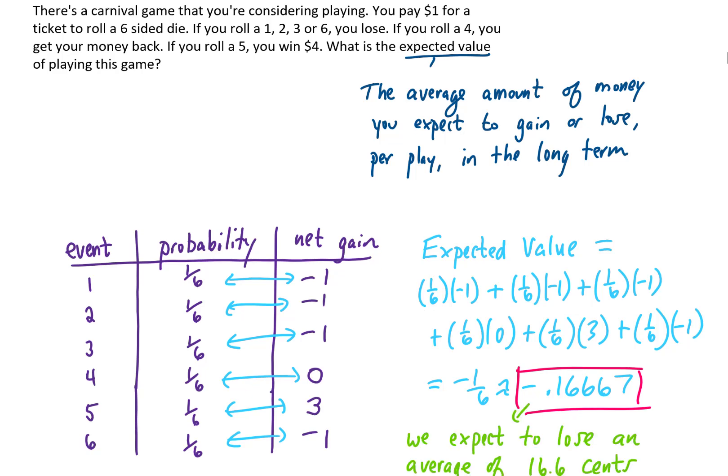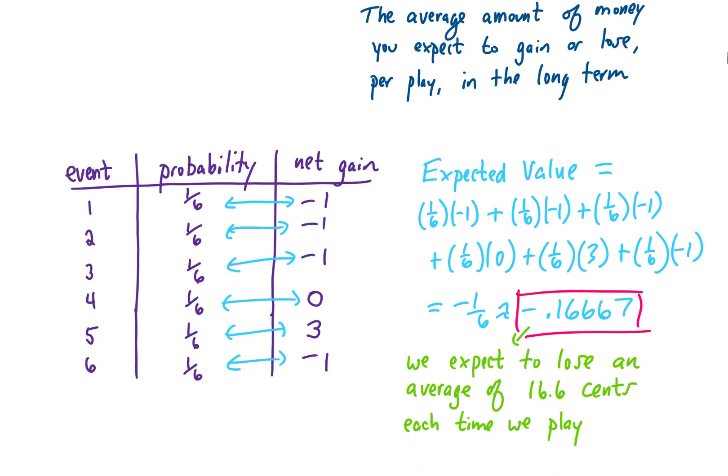Now let's interpret it. Well, what this means is that on average, in the long run, we expect to lose .1666 dollars each time we play.